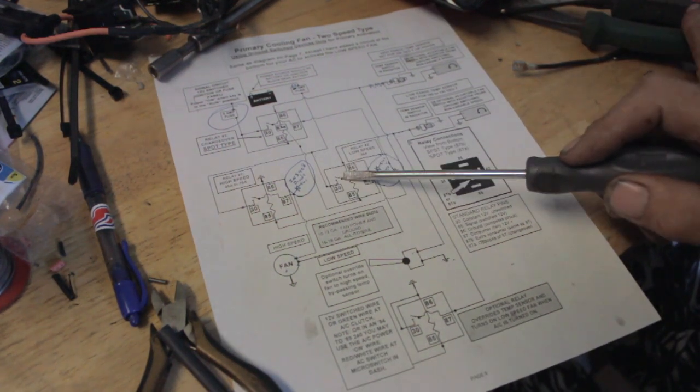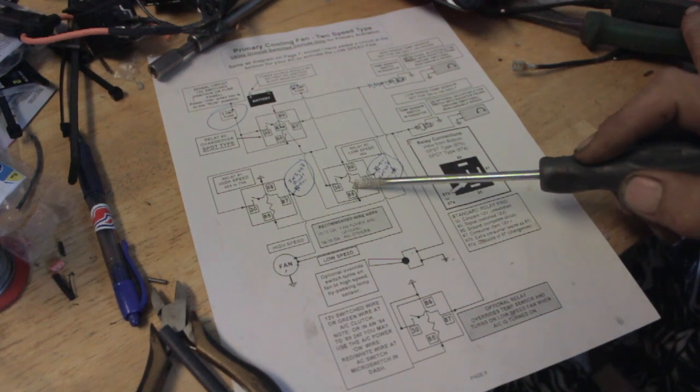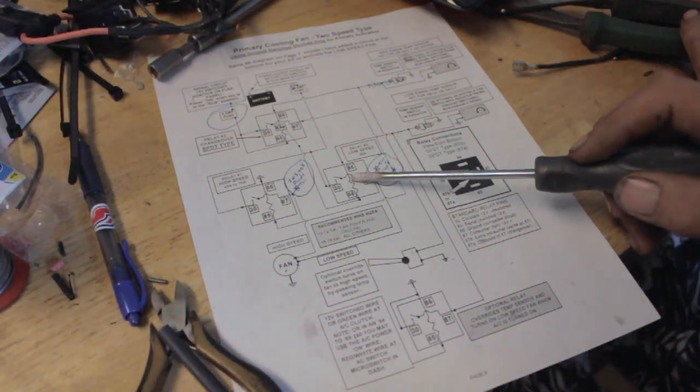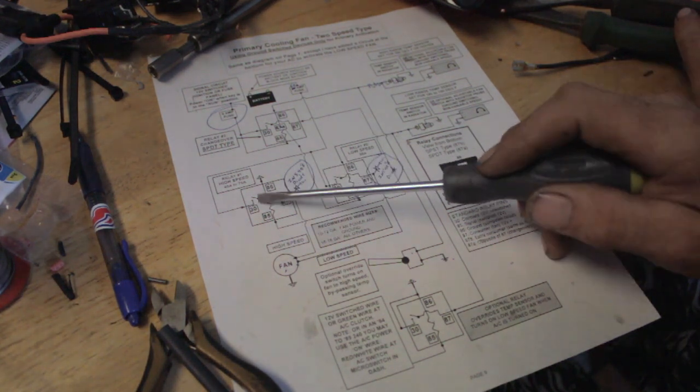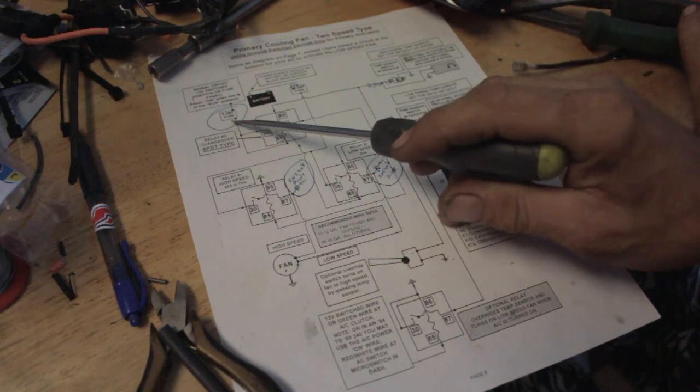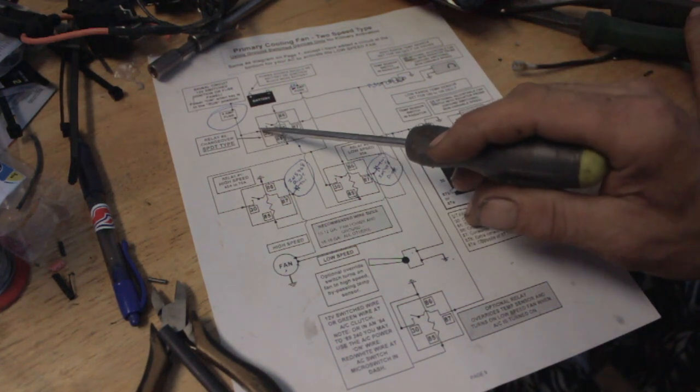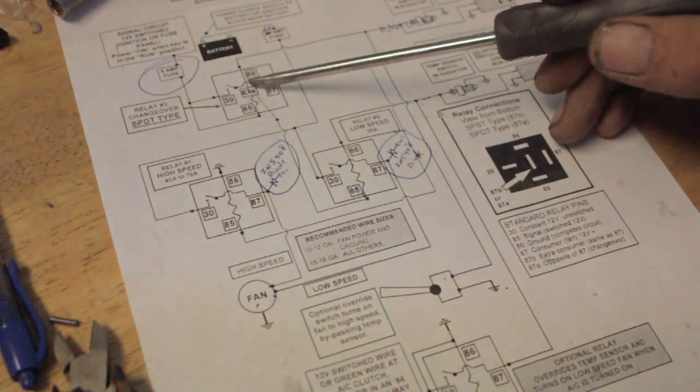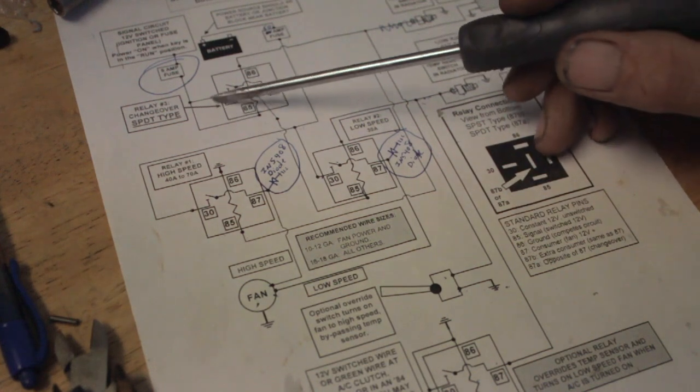So you're going to have power here, here, and here all the time when the key's on. What's going to make these relays close? This is a coil inside here. This is a 12 volt coil. When this 12 volt coil gets energized, that's what closes these circuits. So your line voltage, this is hot all the time. This relay is not going to close until the ground is made. So what's going to make the ground on this one? This is a switching relay.